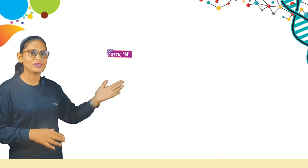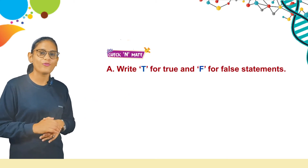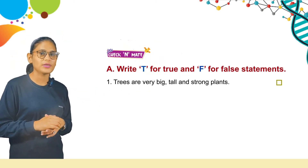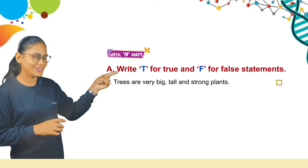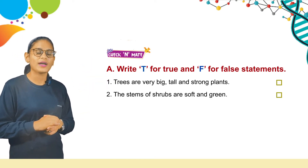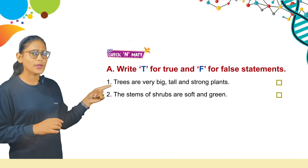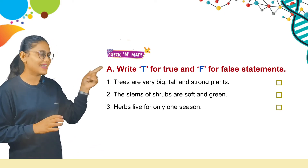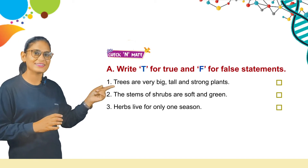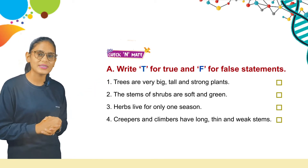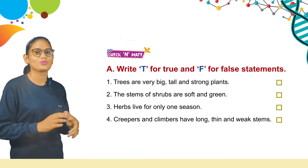Now we have a check and meet section. Part A: write T for true and F for false. The first statement — trees are very big, tall, and strong plants — is true. The stems of shrubs are soft and green — that is false. Herbs live for only one season — that is true. Creepers and climbers have long, thin, and weak stems — that is true.